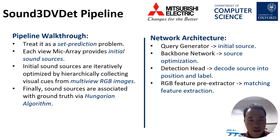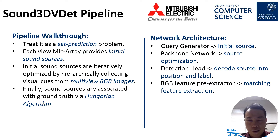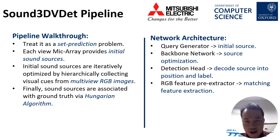The Sound 3D wave pipeline treats the task as a set prediction problem. Each single-view microphone audio signal provides initial sound source cues, and these initial sound sources are further optimized by incorporating visual cues from multiple-view RGB images. Finally, sound sources are associated with ground truth using the Hungarian algorithm. In terms of network architecture, it consists of four main parts: a query generator, a backbone network, and a detection head responsible for decoding sound source representations into corresponding XYZ positions and class labels.